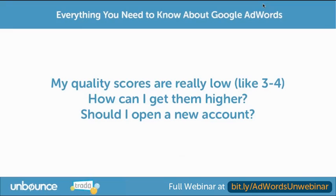The best paid search marketers — the ones that get the best value out of their work — are the ones that spend a lot of time optimizing. Optimizing means A/B testing, it means writing new ad copy, it means trying new markets. It can be very daunting. And so, from a lot of different factors, your quality scores can go down.